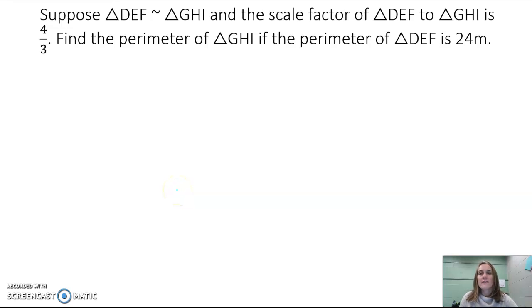Suppose triangle DEF is similar to triangle GHI and the scale factor of triangle DEF to triangle GHI is 4 to 3. Find the perimeter of GHI if the perimeter of triangle DEF is 24 meters.